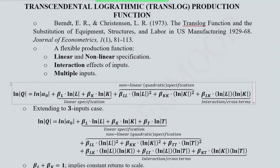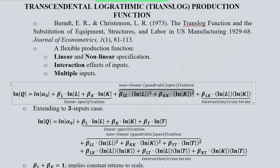As you can see, the natural log appears before all of the variables. The first term is the natural log of the constant term representing the intercept. Then we have the linear specification, which includes the natural log of the first input and of the second input, along with their coefficients. Then we have the nonlinear quadratic specification, where we have the square of the natural log of labor and capital, and they also have their coefficients — B_LL and B_KK.